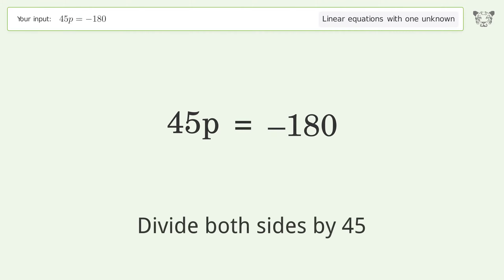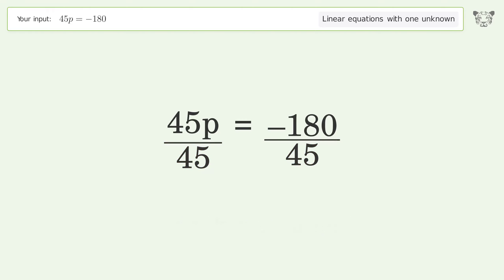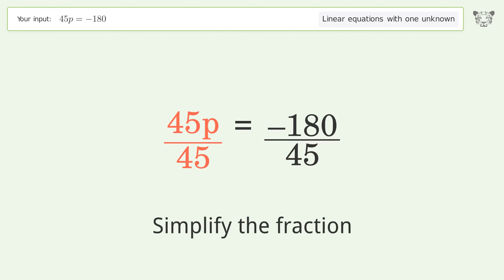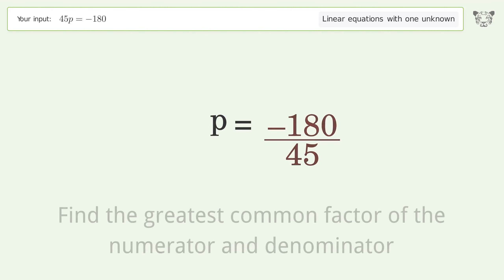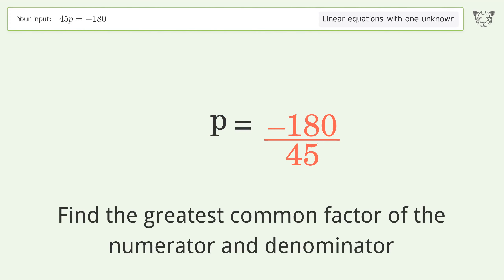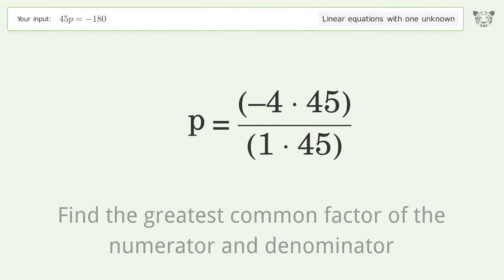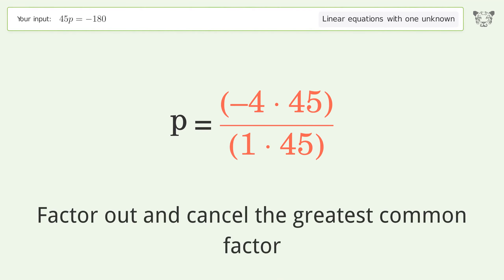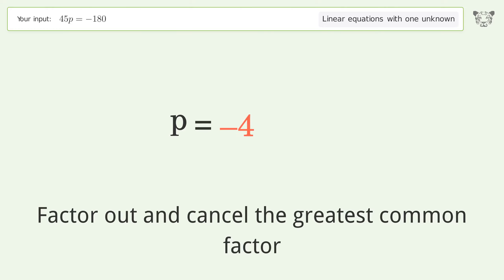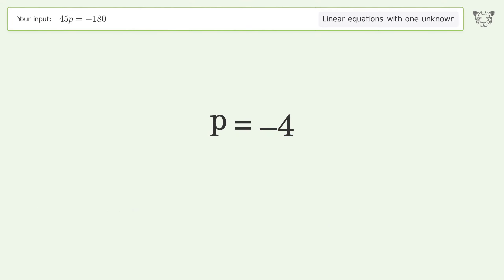Divide both sides by 45. Simplify the fraction by finding the greatest common factor of the numerator and denominator. Factor out and cancel the greatest common factor. And so the final result is p equals negative 4.